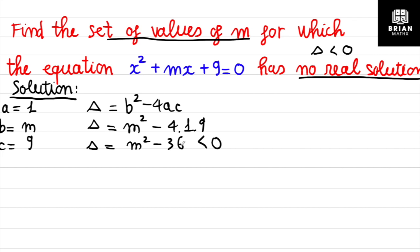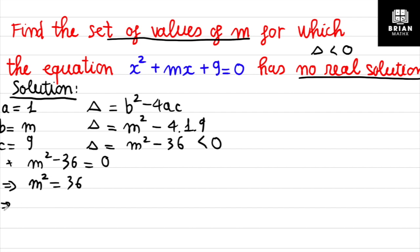So the inequality is m² − 36 < 0. First, solve m² − 36 = 0 as a quadratic equation. This is a special case — you can solve it with a calculator or manually, and you get m = 6 or m = −6.